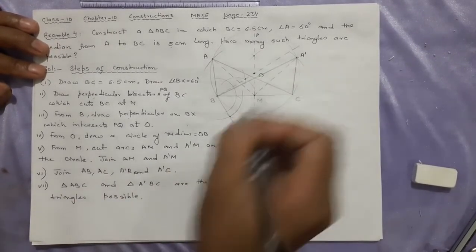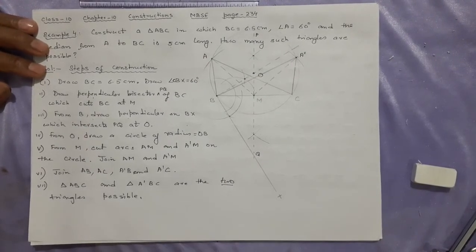How many triangles possible? Two triangles are possible. That's all. Thank you.